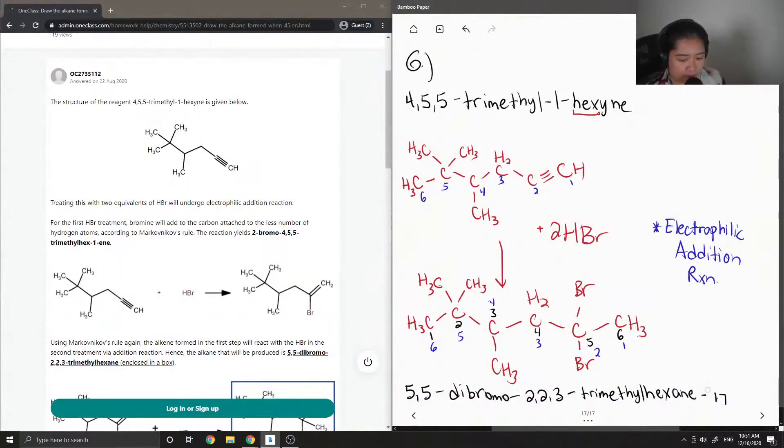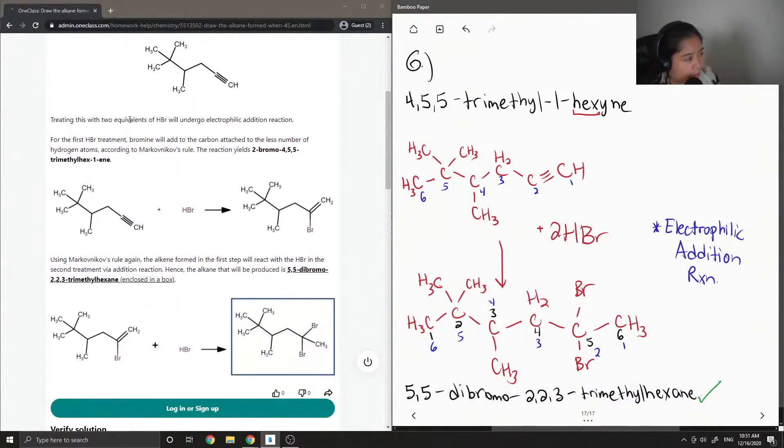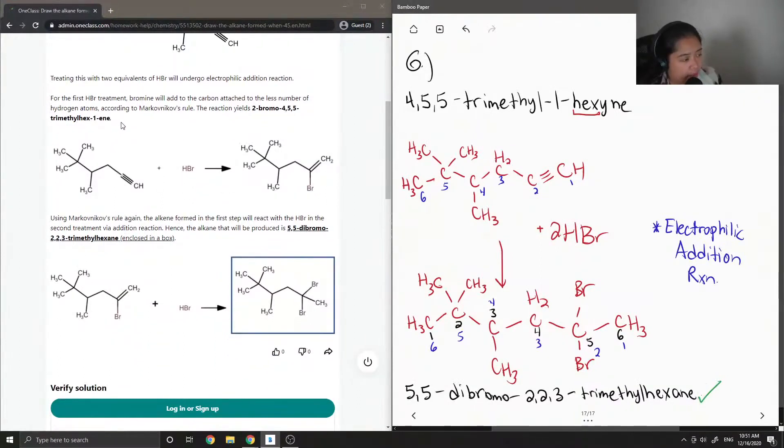Let's see what the tutor said. The structure of reagent 4,5,5-trimethyl-1-hexyne is given below. Treating this with two equivalents of HBr will undergo electrophilic addition reaction. For the first HBr treatment, bromine will add to the carbon attached to the less number of hydrogen atoms according to Markovnikov's rule. The reaction yields 2-bromo-4,5,5-trimethylhexane.